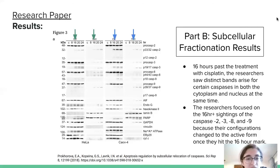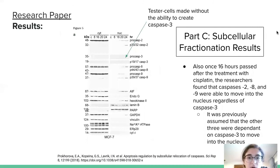There are high levels of the inactive form in the cytoplasm but none in the nucleus. Once 16 hours passed after cisplatin treatment, caspases 2, 8, and 9 were able to move into the nucleus regardless of the presence of caspase 3. This test used cells that couldn't create caspase 3. It was assumed the other three were dependent on caspase 3 to move into the nucleus, but these results show otherwise.